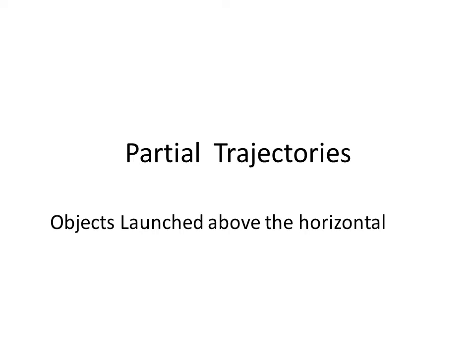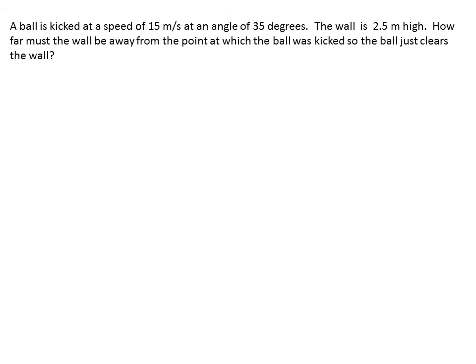This is an example of how to solve a partial trajectory problem where the object is launched above the horizontal. In our example we have a ball that is kicked at a speed of 15 meters per second at an angle of 35 degrees.